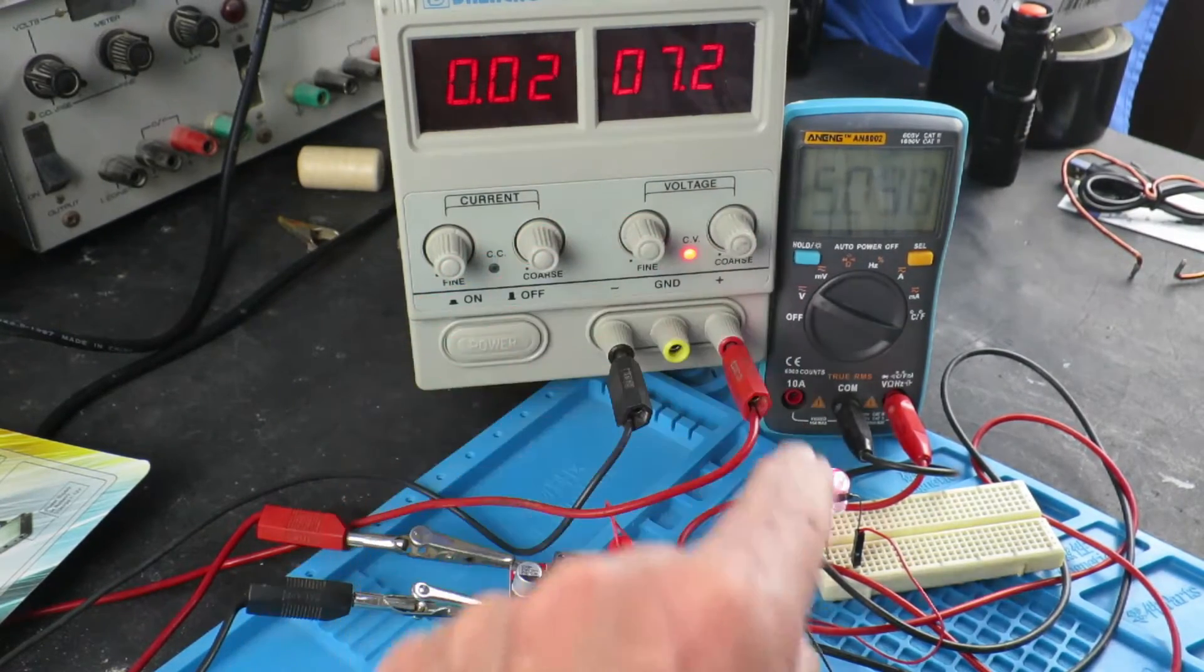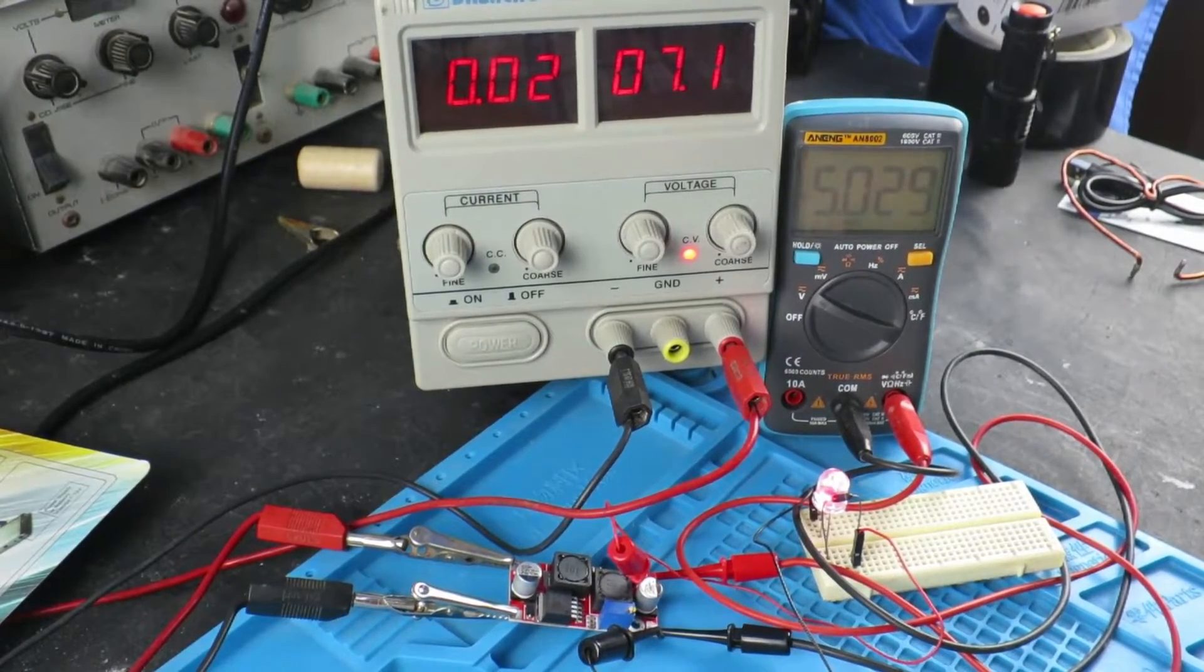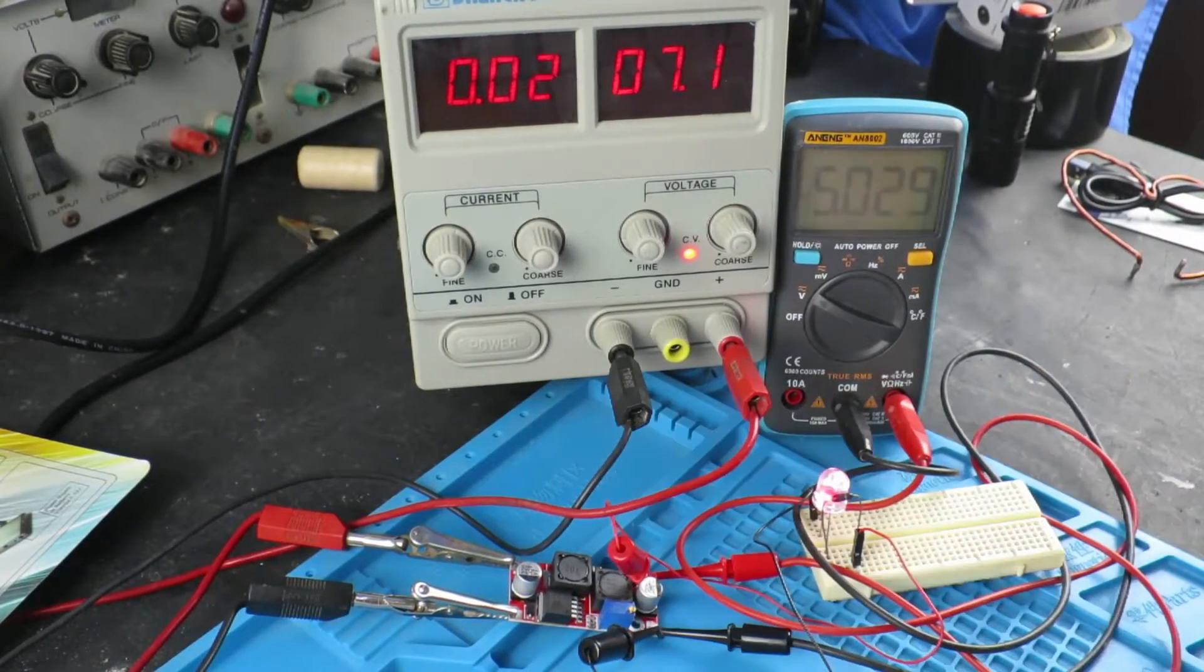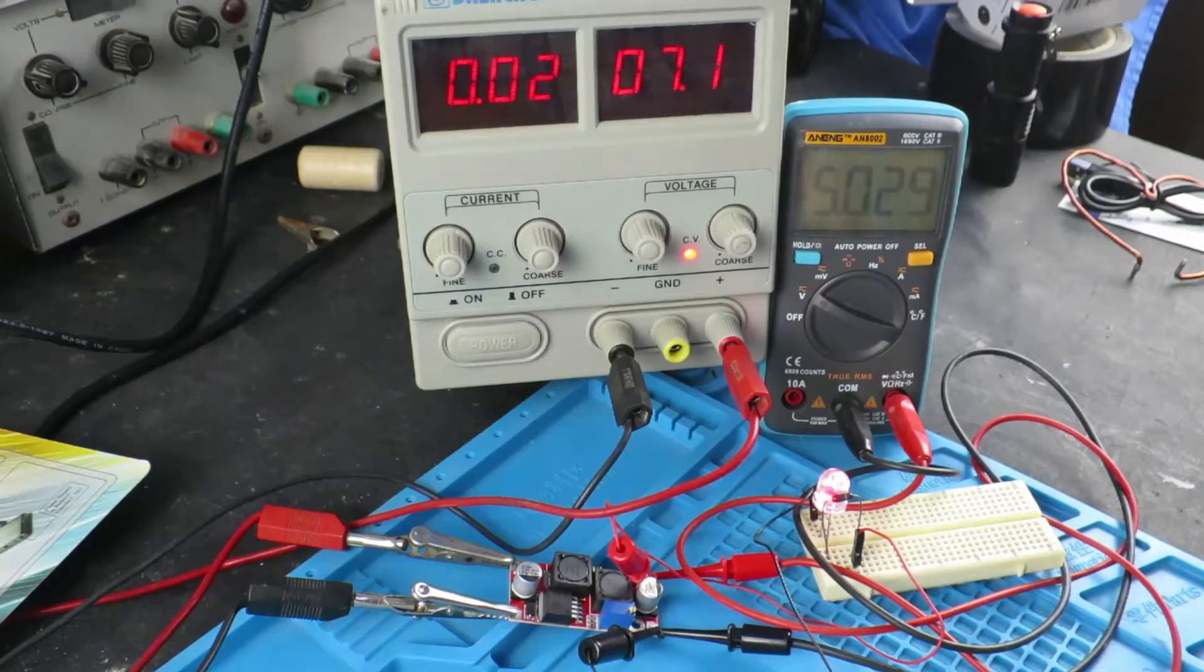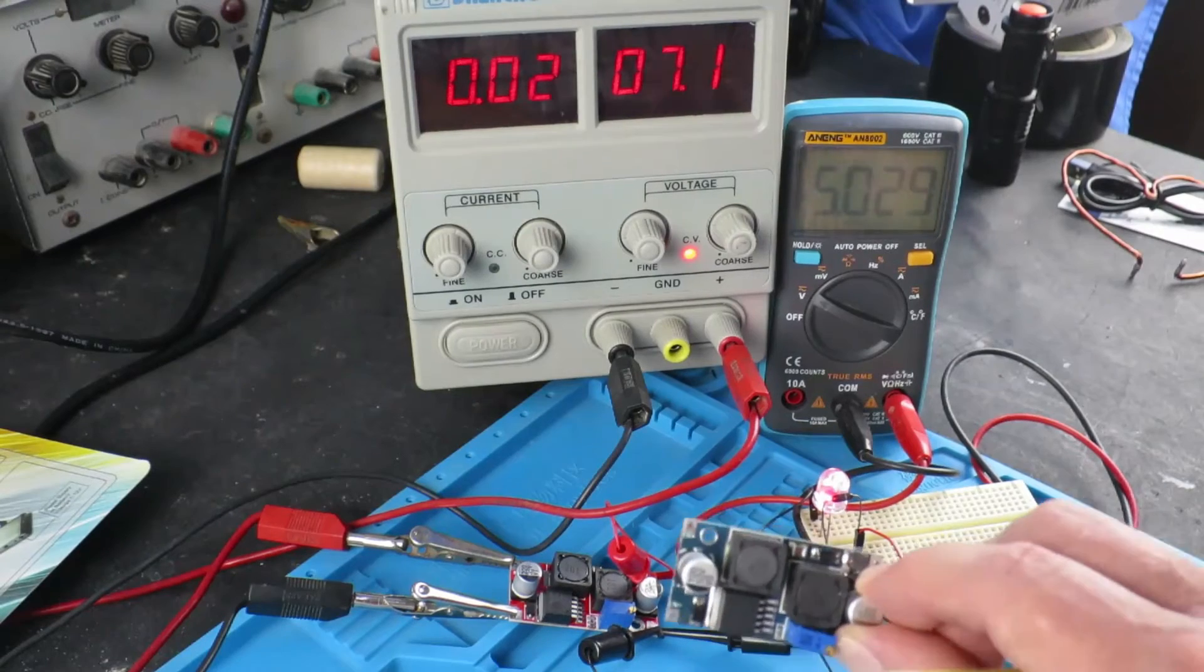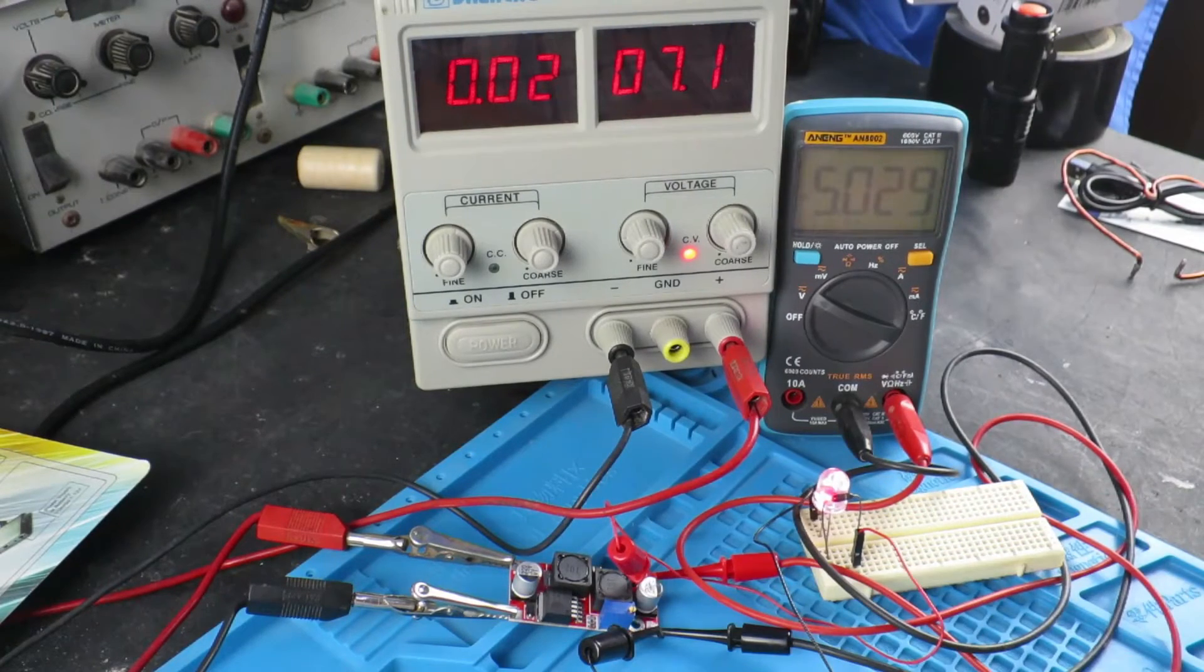So the nasty behavior that the XL6009 device has is not the same on this device so I would give it a thumbs up as a solar regulator. It's at practically the same price as this unit as well.